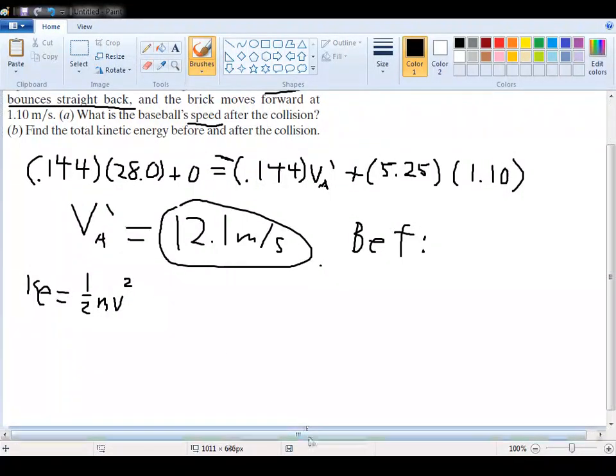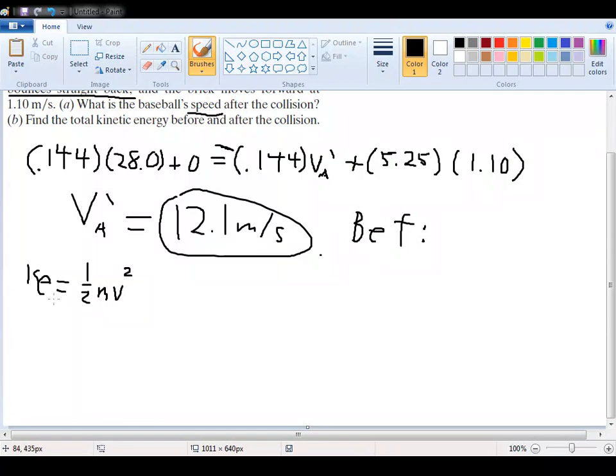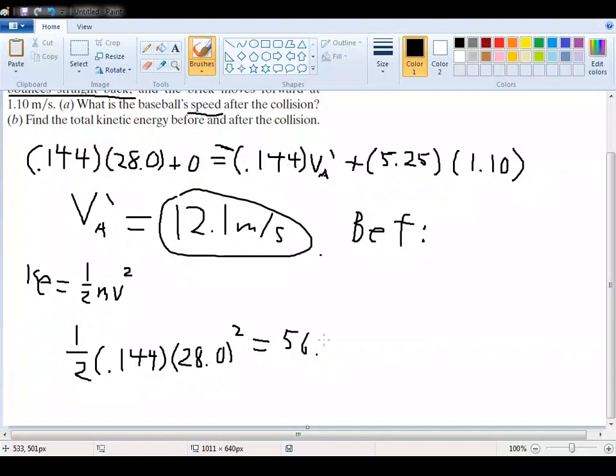We're just simply going to plug these values in. So it's going to be one-half times the mass, which in this case is 1.44 kg, times our velocity squared, so 28.0 squared, which is going to be equal to 56.4 joules.